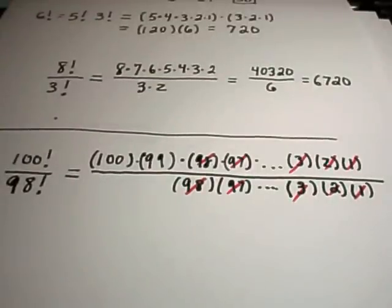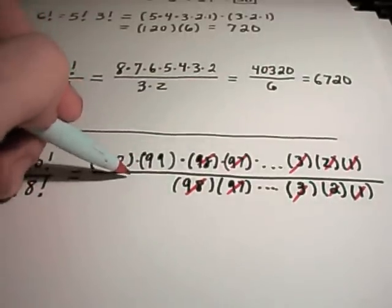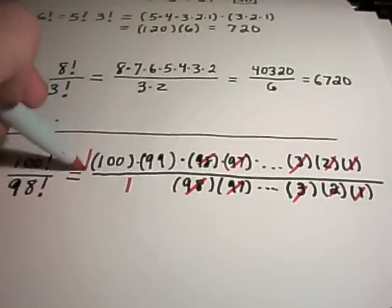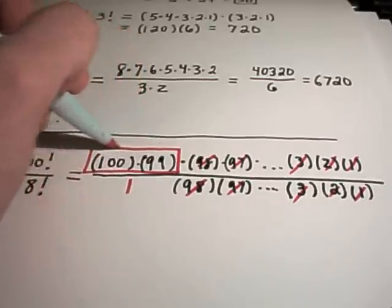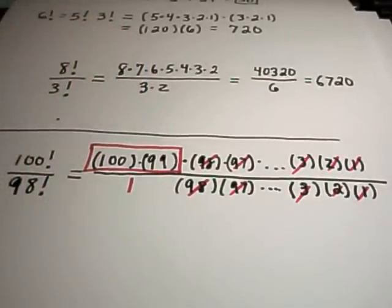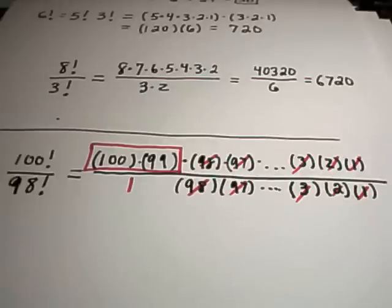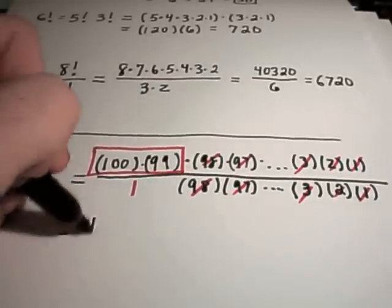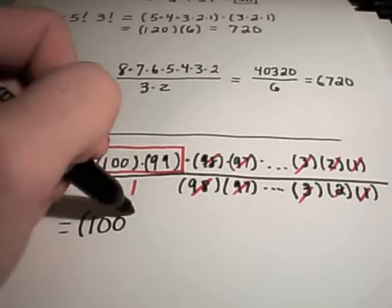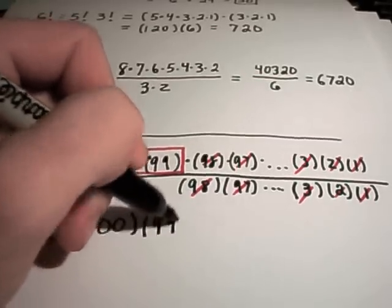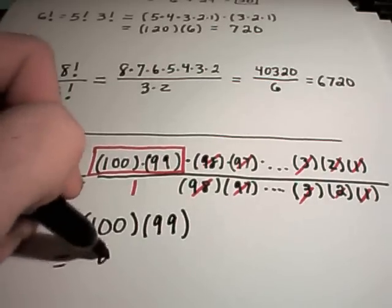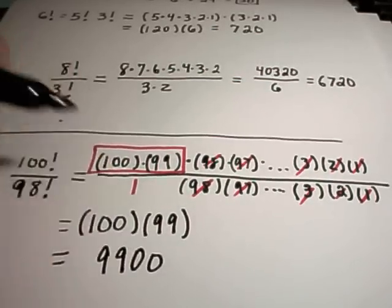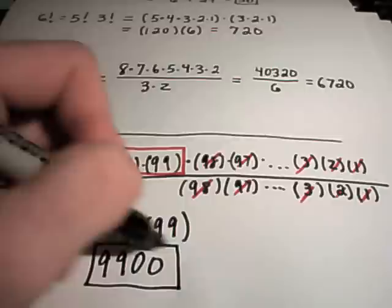The only thing that I would be left with then is you could still think about there as being a 1 on the bottom, but I would just be left with basically the first two numbers on top. And so 100 factorial over 98 factorial is really just 100 times 99, which that would simply give me 9,900.